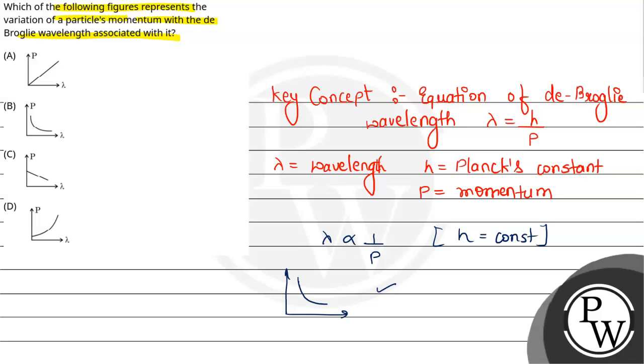And what is D? P increases with lambda, so D is wrong. How is our solution correct? B option, because that is the inverse graph. Hence, the final answer for the given question is option B. Hope you understood it well. Best of luck.